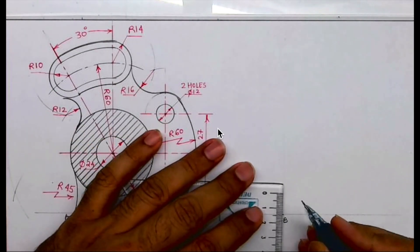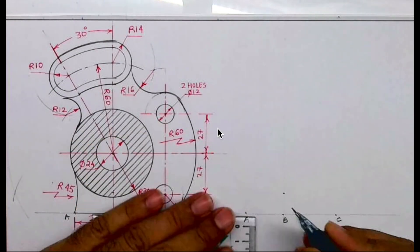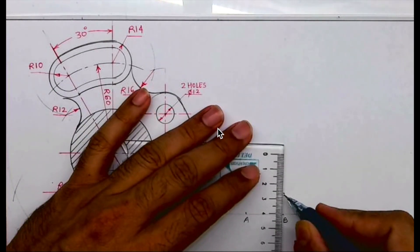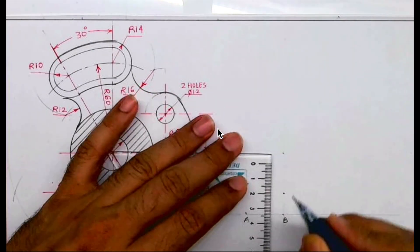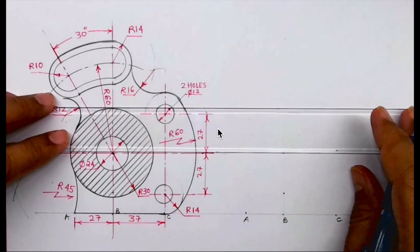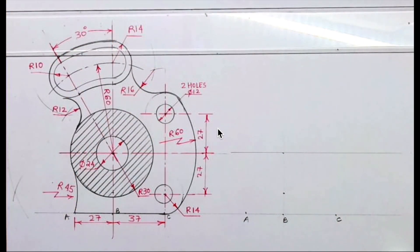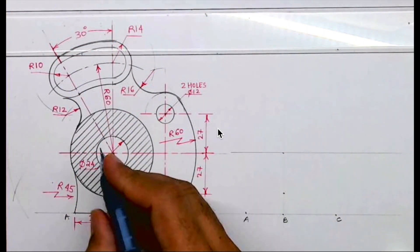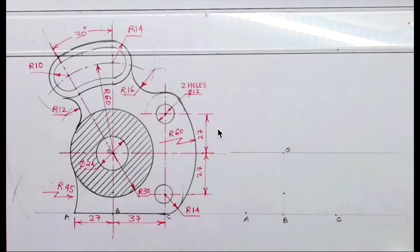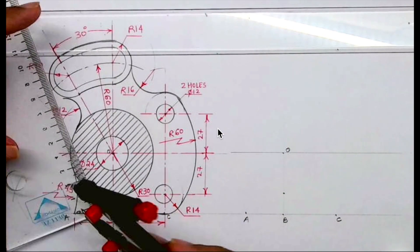We can mark 14 plus 27, so we'll get point O. This is point O. Now from O we can draw radius 30.